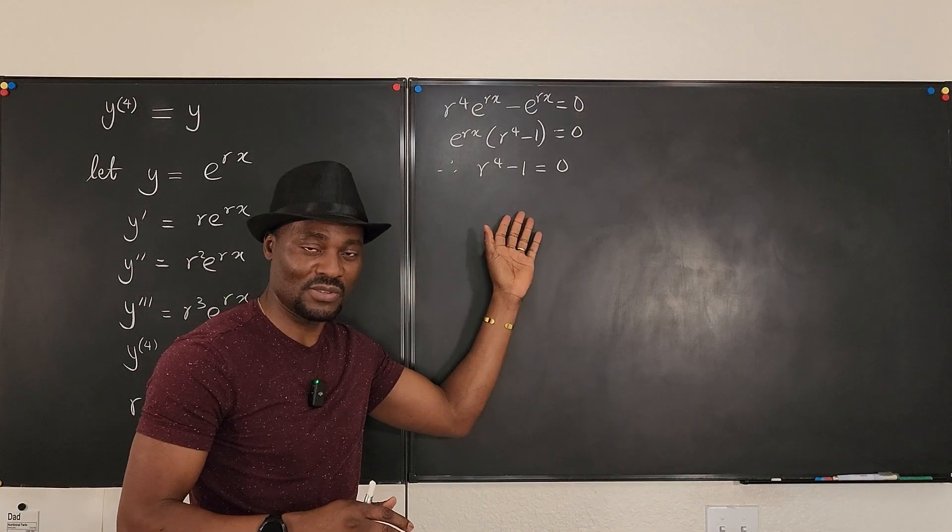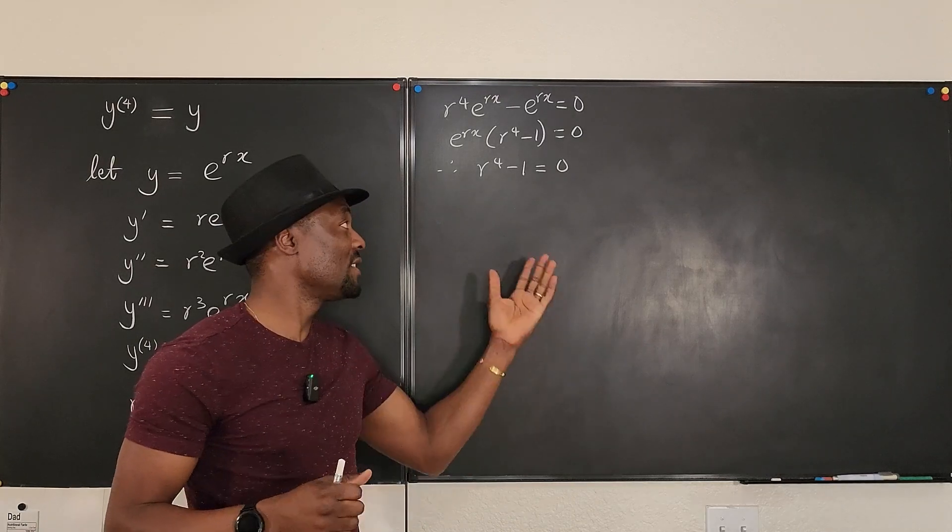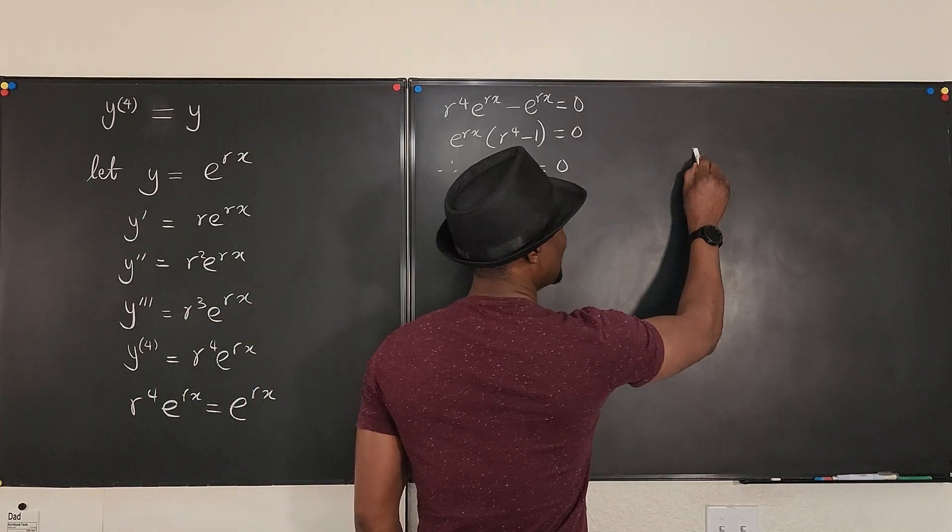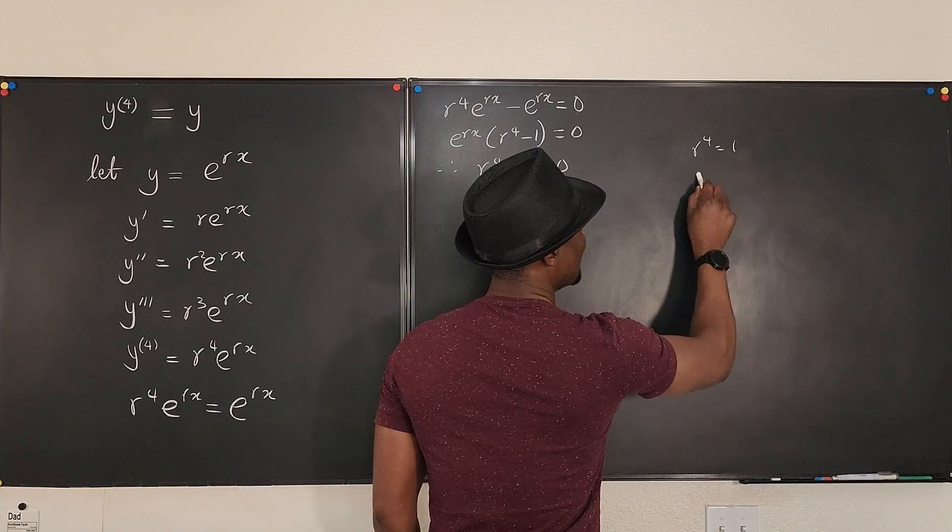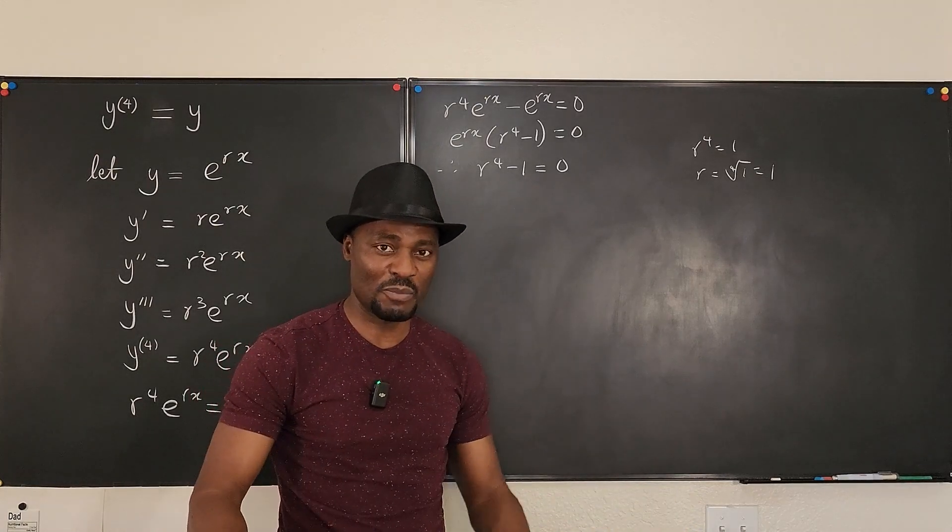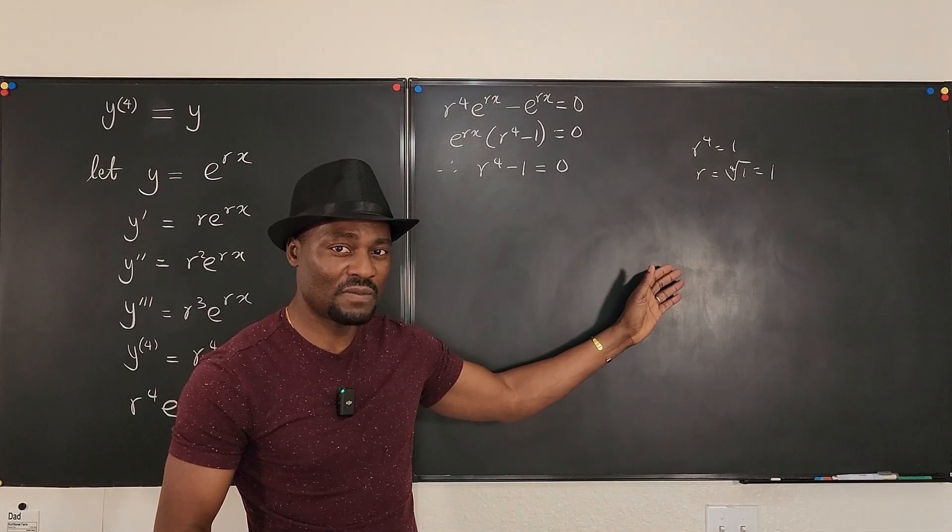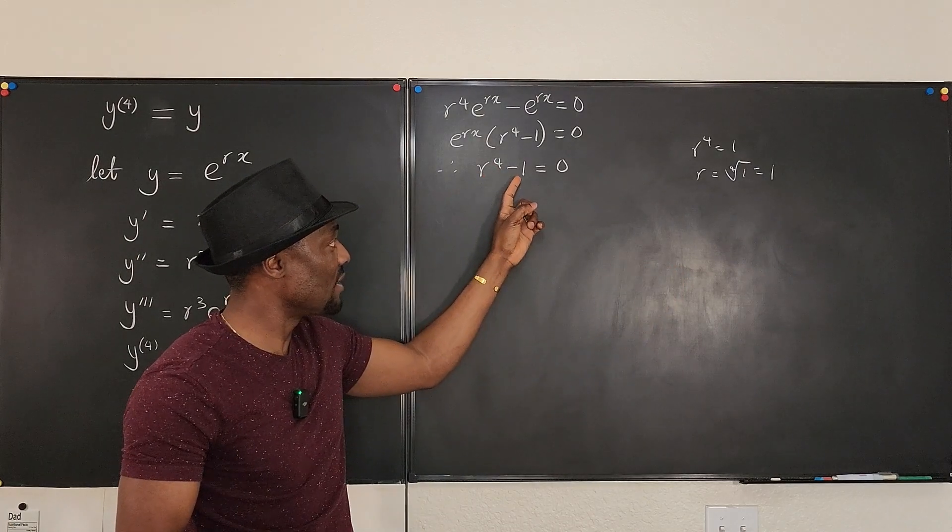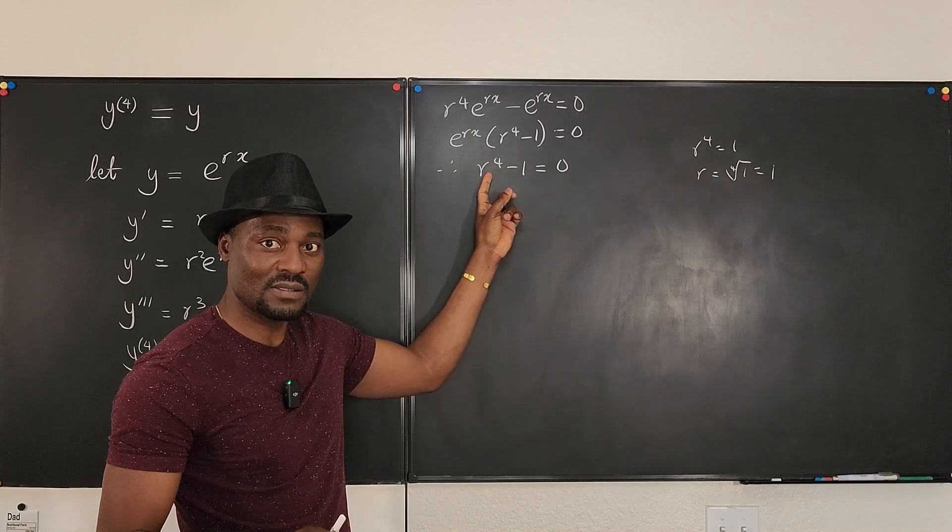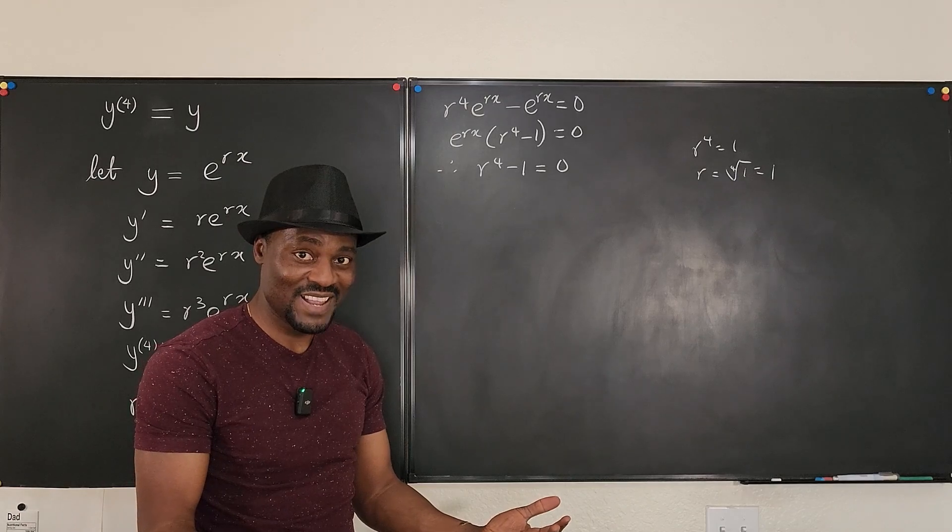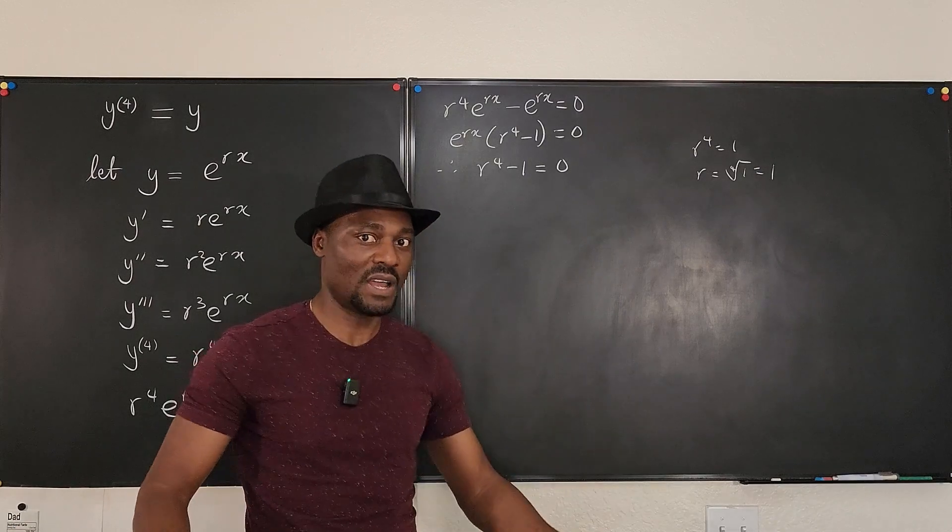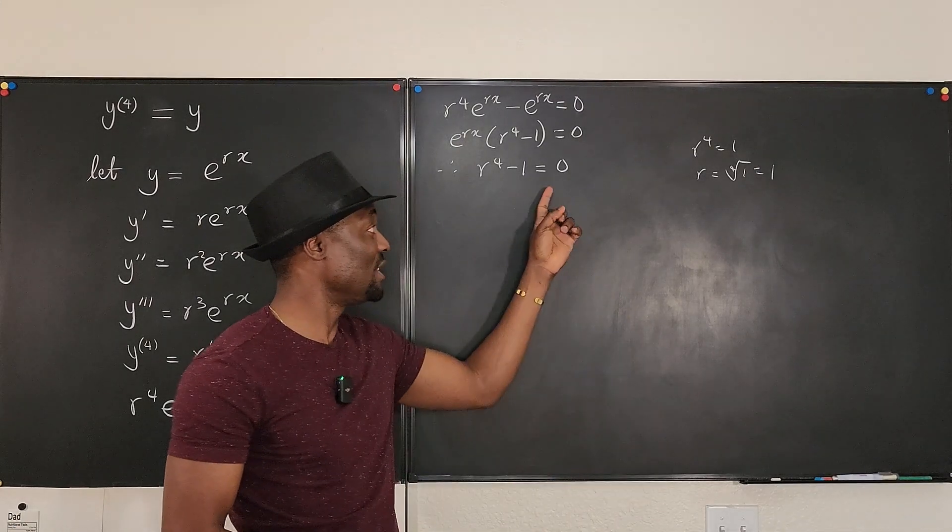Now, why did I choose this question? I know students who would, as soon as they see one on one side, they move the one to the other side and they say, oh, let's take the fourth root. So r to the fourth equals one. So that r equals the fourth root of one, which is equal to one. So they get one answer, r equals one. But that does not conform with the fundamental theorem. If you have r to the fourth minus one equals zero, then you need four answers. You have to get four answers, even if they are repeated. And you cannot say it's r equals one four times, because there are other numbers that would give you the same answer.